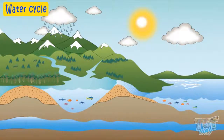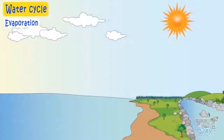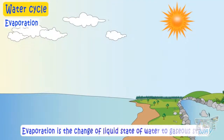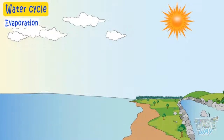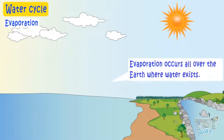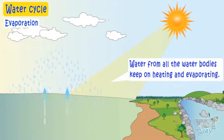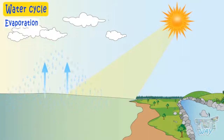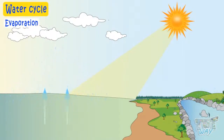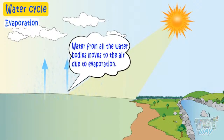Let's start with the process of evaporation. Evaporation is the change of liquid state of water to gaseous state. Evaporation occurs all over the earth where water exists. Water from all water bodies keeps on heating and changing to gaseous state, so it's the process of evaporation because of which water from all the water bodies is moving to the air.